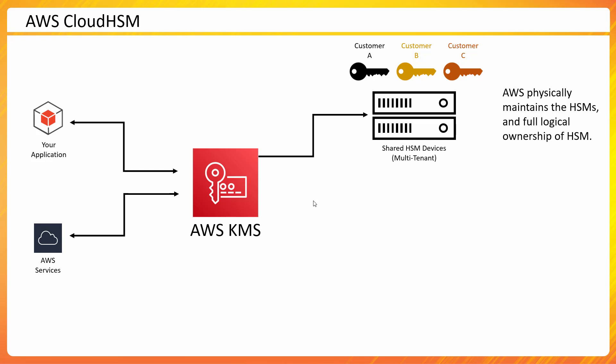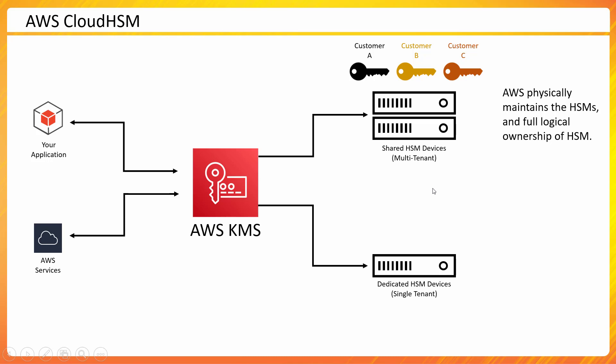It's like taking a commercial flight where multiple people are traveling with you. On the other hand, you may want a private jet, but the cost is very high. Someone might look for a private jet due to a security concern, or in our world maybe a compliance requirement which says we can't use any shared hardware. In that case we would have to look for a dedicated HSM device — a single-tenant device.